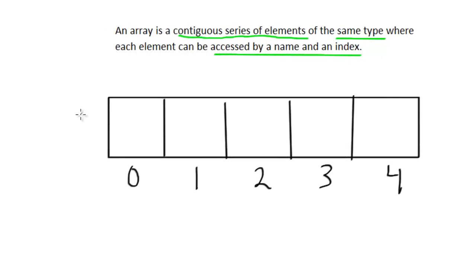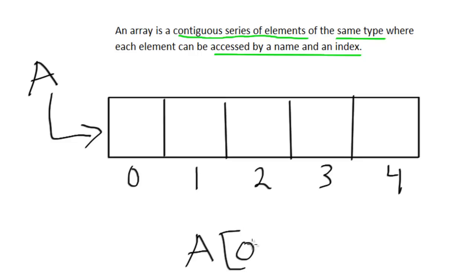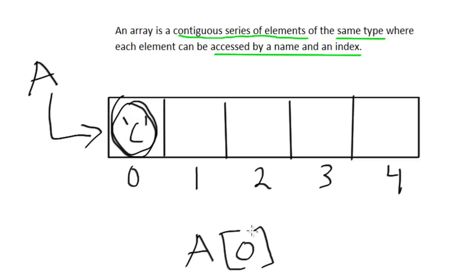When we create an array we give it a name — say this array is called A. To access a particular element we specify the array name, an open square bracket, an index like zero, then a close square bracket. If this appears on the right-hand side of an assignment statement we're retrieving that value; if it appears on the left-hand side we're storing a value there. For example, if this is a character array holding the character C at index zero, we access it with A[0].